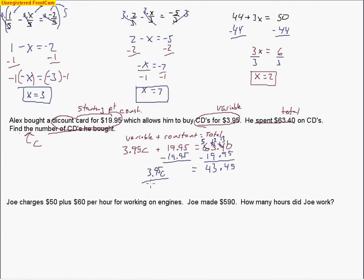So now we're ready to divide on both sides by that 3.95. So when I do that, I'm going to move that decimal over two spaces. Do the same thing here. So really what I'm doing is 395 into 4,345. So 395 only goes one time into 434. So I'll subtract now. And I have to borrow, and this becomes a 12.